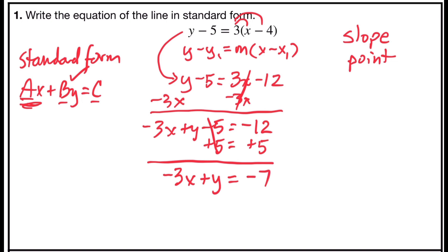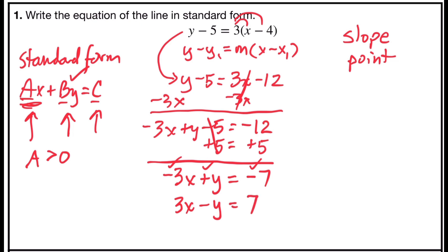I'm almost there. I have my x term plus my y term equals a number, but a has to be positive. So I'm going to multiply both sides by negative 1 — all of my signs are going to reverse. I get positive 3x, negative y, and positive 7. Putting my equation in standard form: 3x minus y equals 7.